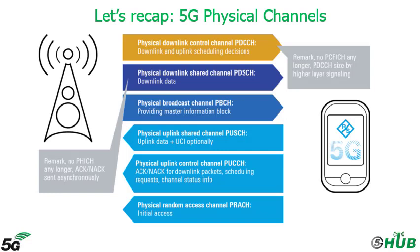To recap the 5G physical channels: we have three main downlink and three main uplink channels. Compared to LTE, there is no Physical Control Format Indicator Channel, as the PDCCH size is determined by higher layer signaling, and no Physical HARQ Indicator Channel. In downlink we have: Physical Downlink Control Channel, Physical Downlink Shared Channel, and Physical Broadcast Channel. In uplink we have: Physical Uplink Shared Channel, Physical Uplink Control Channel, and Physical Random Access Channel for initial access. Thank you for watching and see you in the next video.